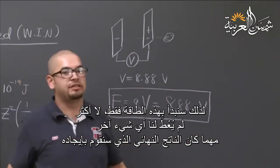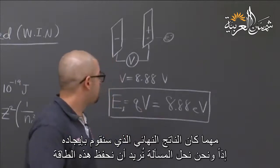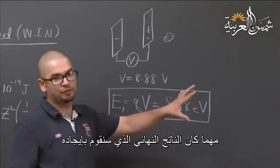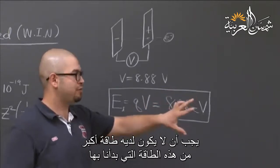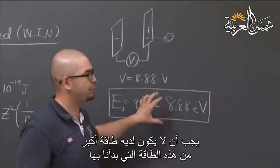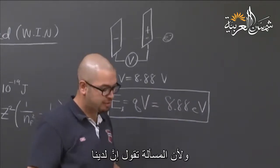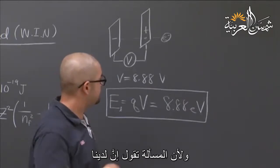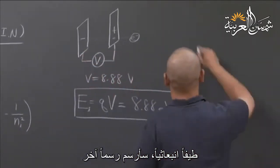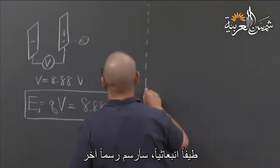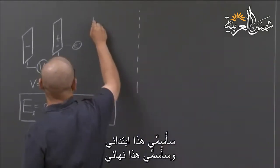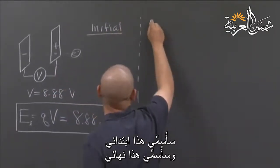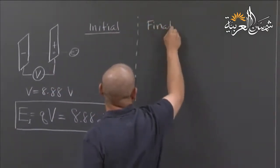We just start with this initial energy — nothing else is given from the problem, so we want to conserve it. Our final state, the combination of whatever we are solving, should not have a higher energy than what we initially started with. Because the problem says we have an emission spectrum, I'm going to draw another image. I'll label this one 'initial' and this one 'final.'